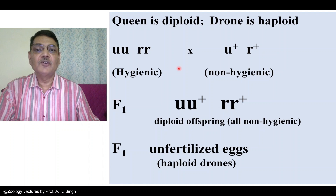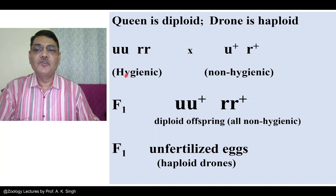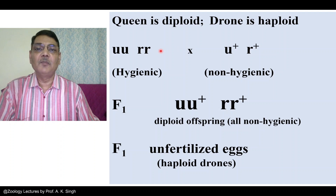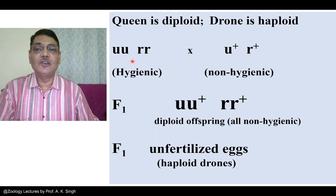Here we can see how genes regulate specific behavior, that is nest cleaning behavior in honeybees. If you take a female which is of hygienic nature — meaning she produces workers which are hygienic — and she is mated with a male of UR type, then all such workers will be of genotype UURR and will be of hygienic nature.